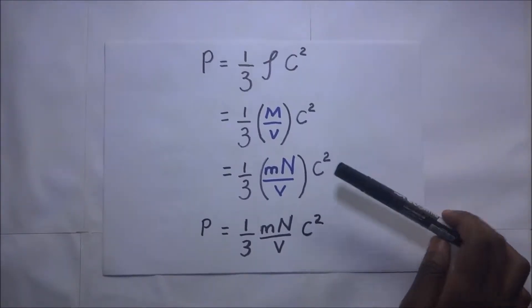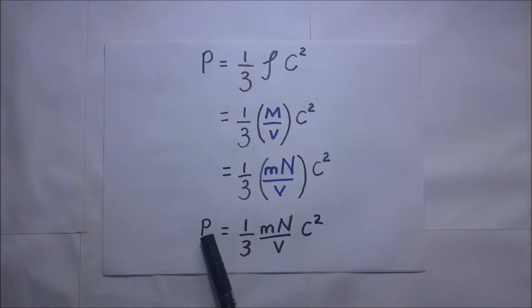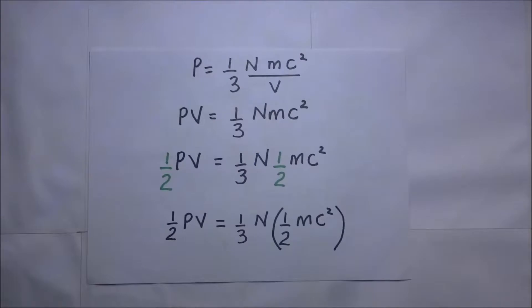From here, we have the expression that P (pressure) is going to be one-third MN over V times c squared. In our next step,